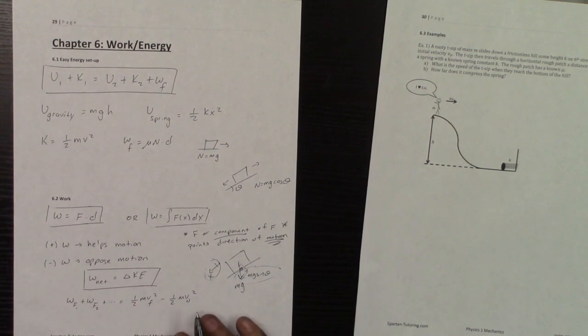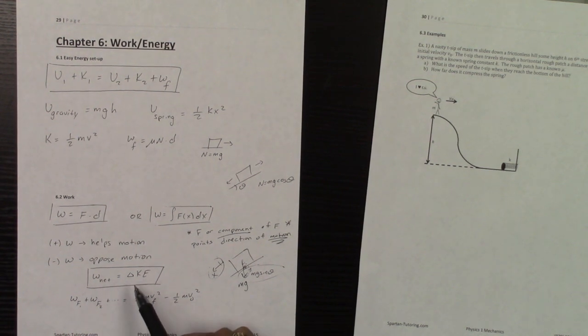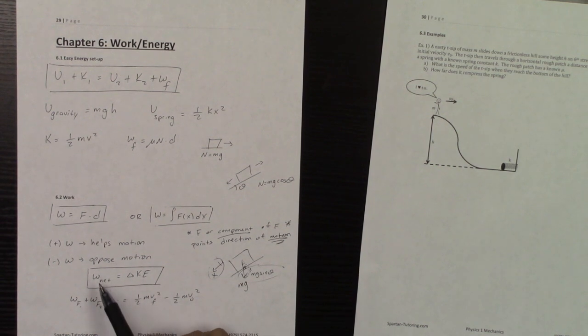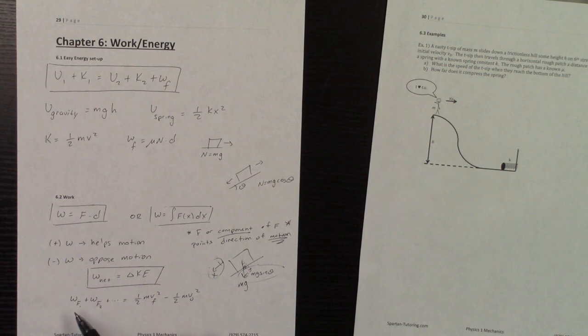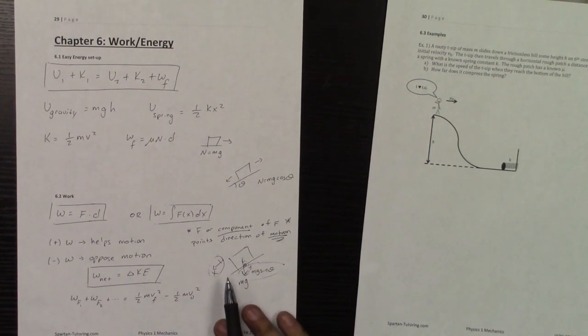Finally, one of the most important equations in all of physics is that the network done on a system is equal to that system's change in kinetic energy. Now the way you calculate the network done on a system is you're going to add up all the works done by all of the forces, and then your change in kinetic energy is literally your final kinetic energy, one-half mvf squared, minus your initial, which is one-half mv0 squared.